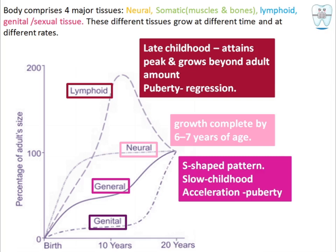Lymphoid organs reach a peak at late childhood, around 10 to 11 years of age, growing beyond the adult amount — reaching 200% of the adult value — and then at puberty they regress back down.